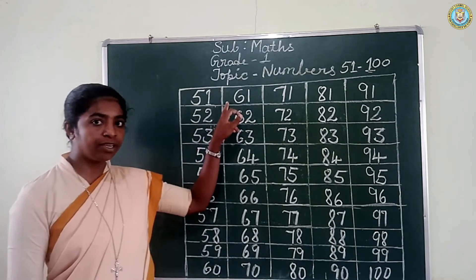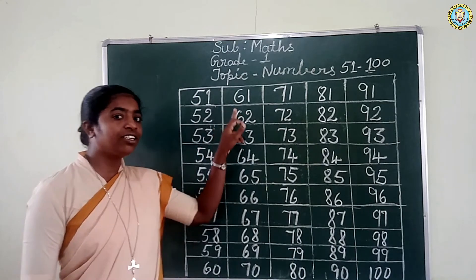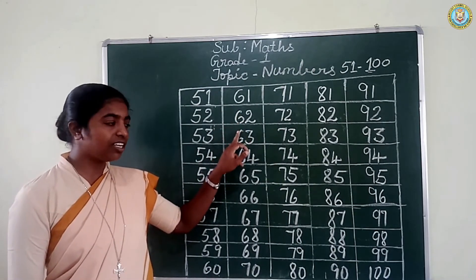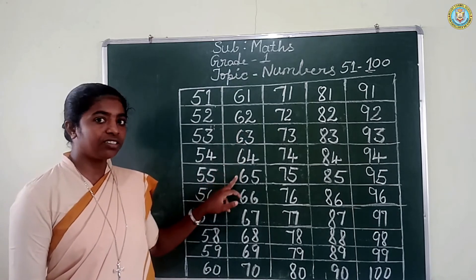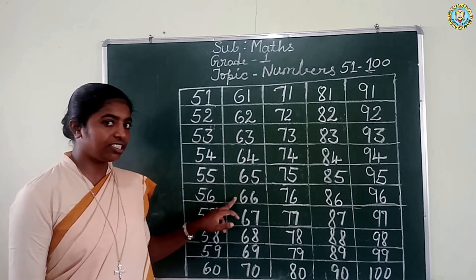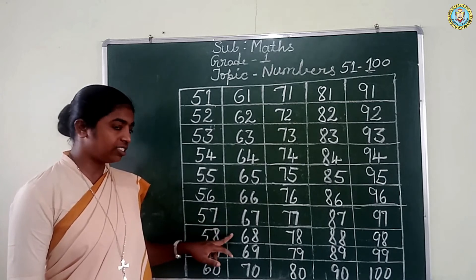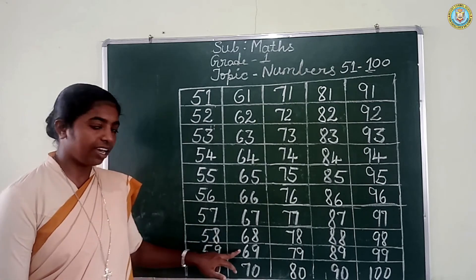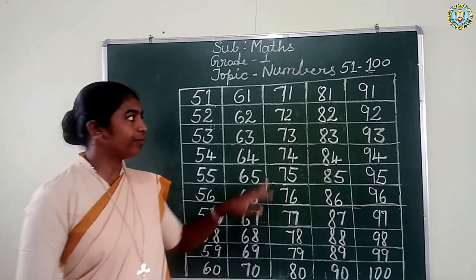Repeat after me. 61, 62, 63, 64, 65, 66, 67, 68, 69, 70. Very good children.